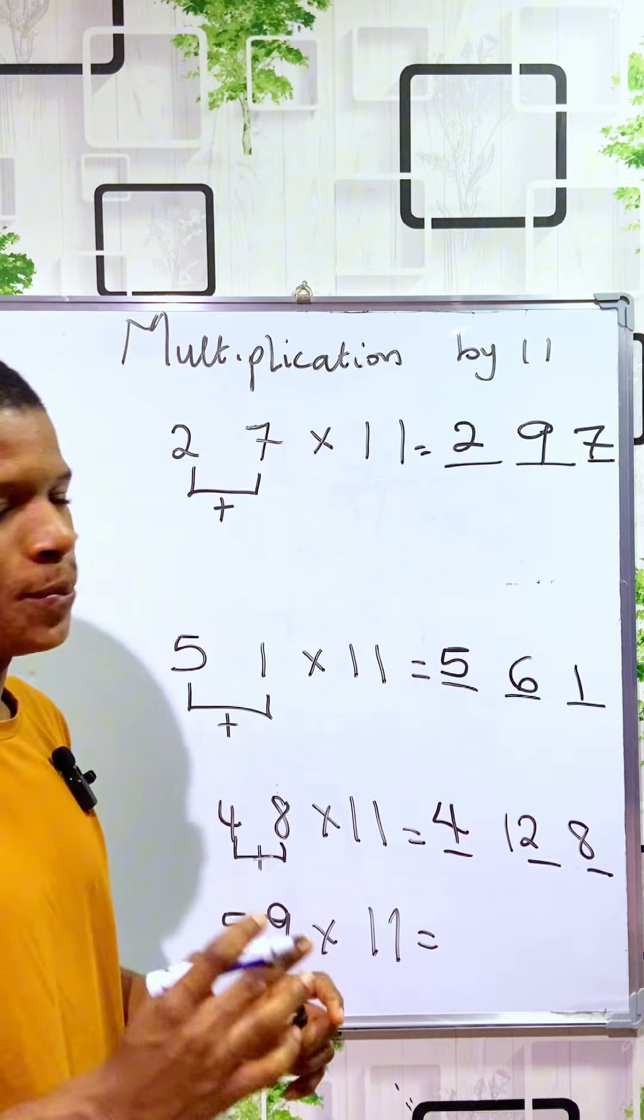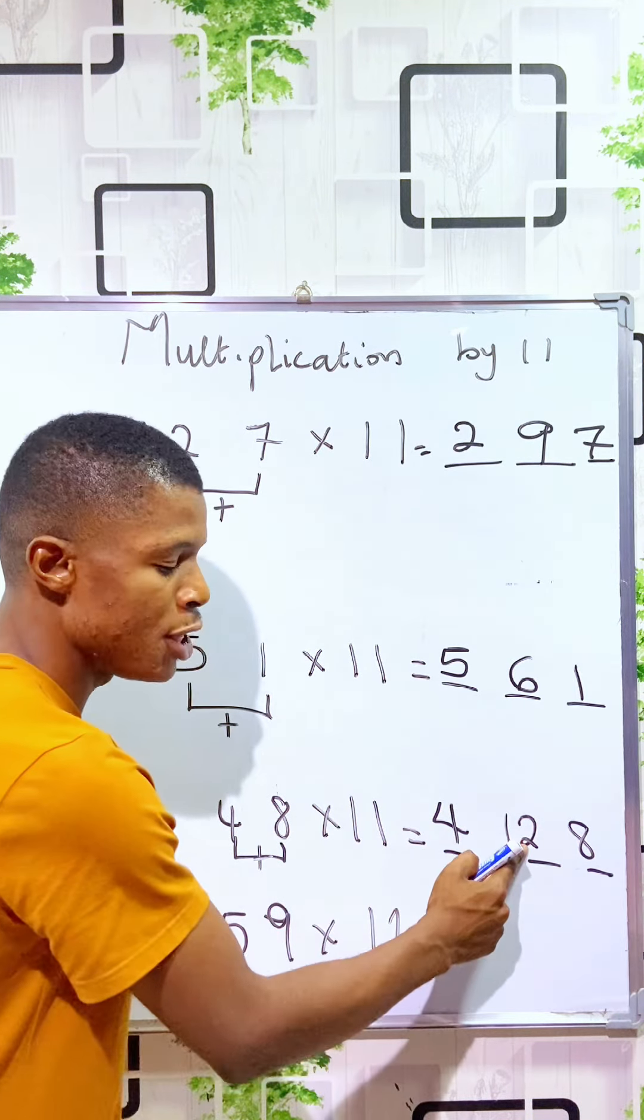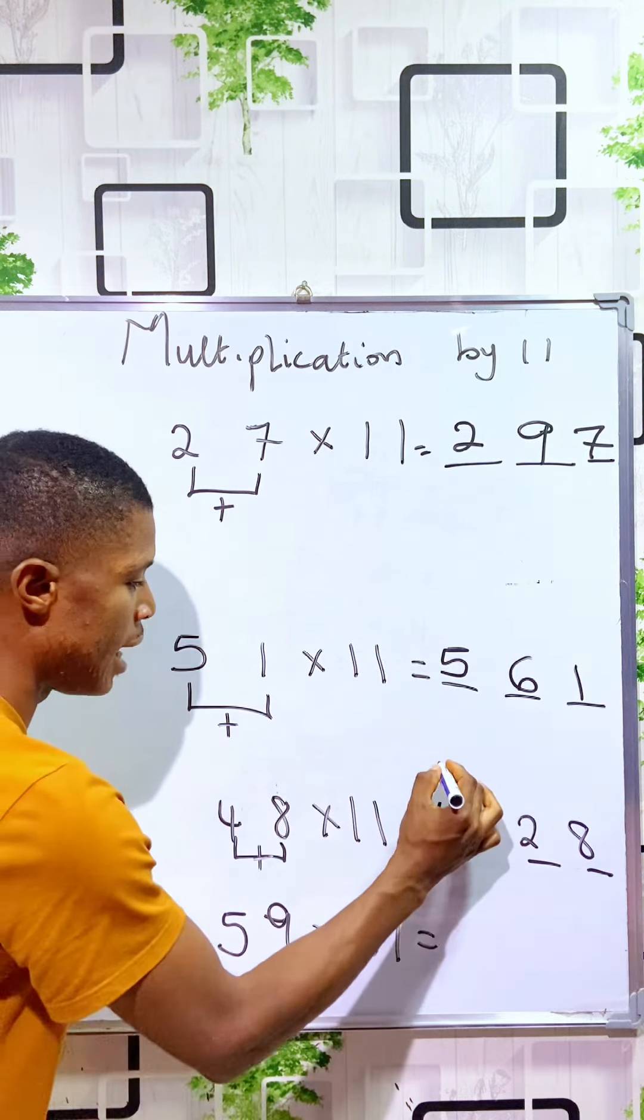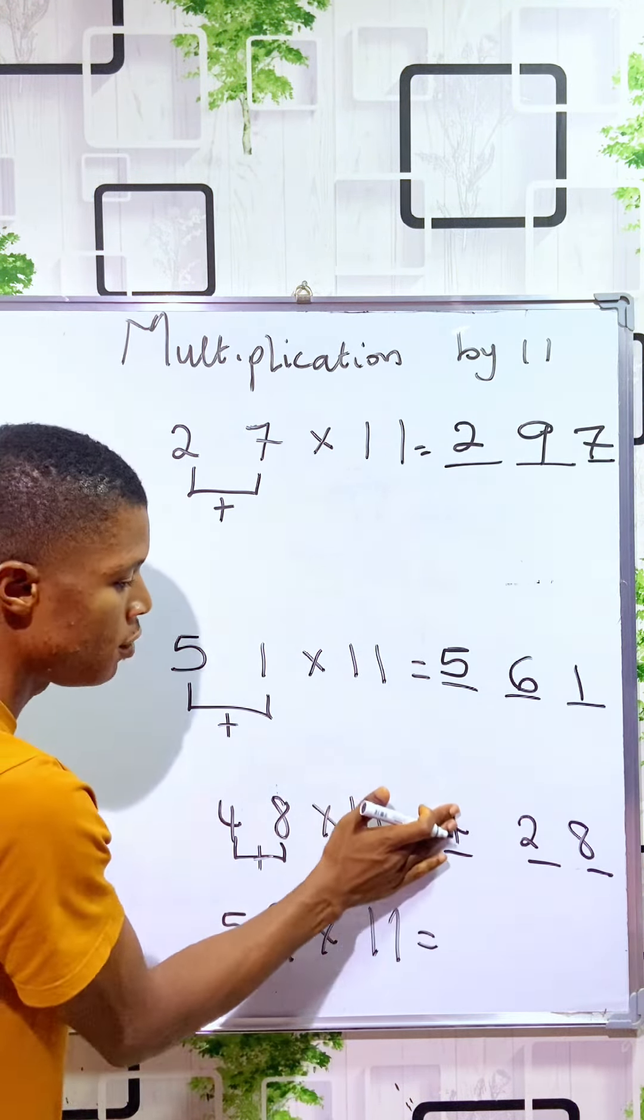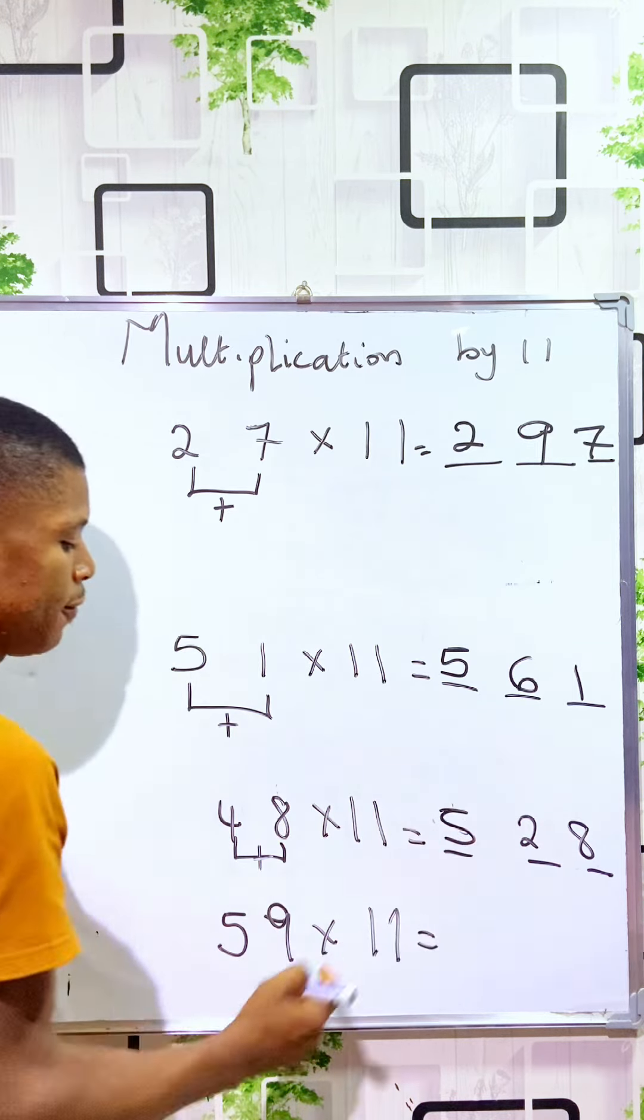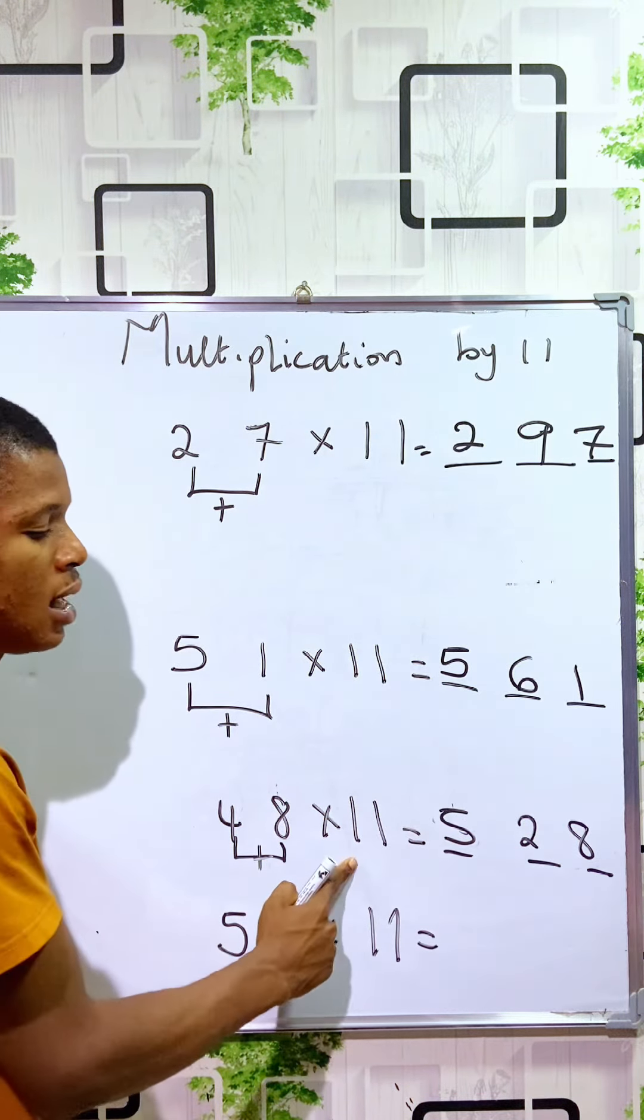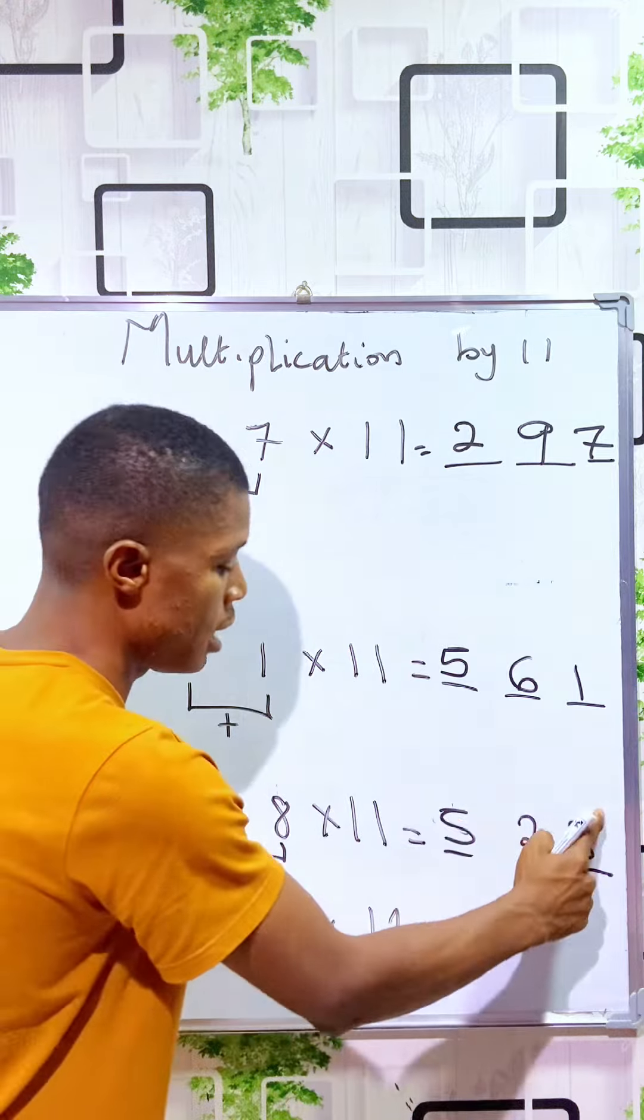Oh no, we just write the unit and carry the tenth value and add it to the last digit. One plus four is five, so 48 times 11 is 528.